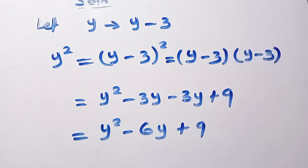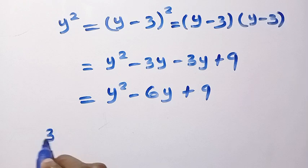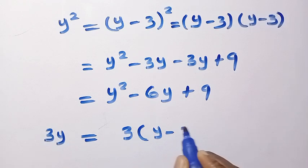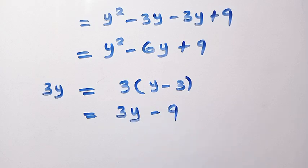And also we have 3y, which we have changed y to y minus 3. Here we have 3y, which is equal to 3 into bracket of y minus 3. And 3 into bracket of y minus 3. This gives us 3y minus 9.